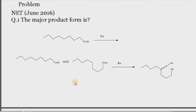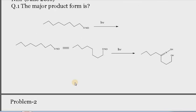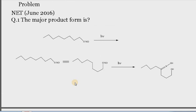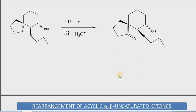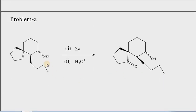Here are two problems asked in different competitive exams. In the first problem, this is the reactant — alpha, beta, gamma, and delta — so you put the NO at the delta position, and it gets photolyzed to form the oxime.